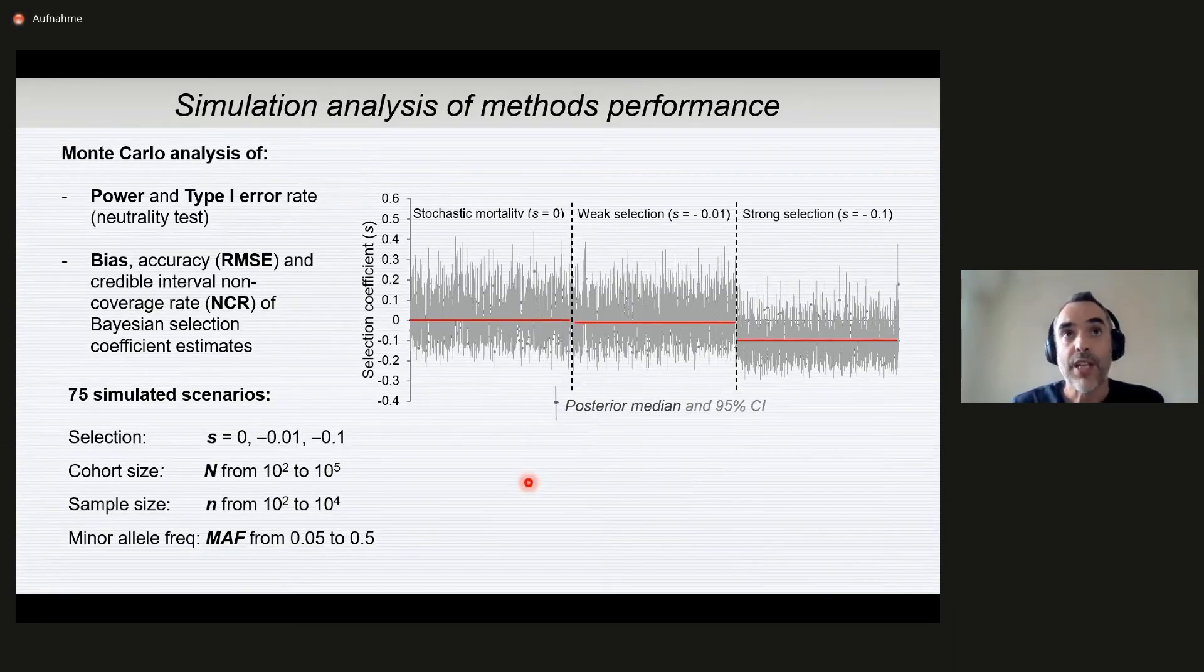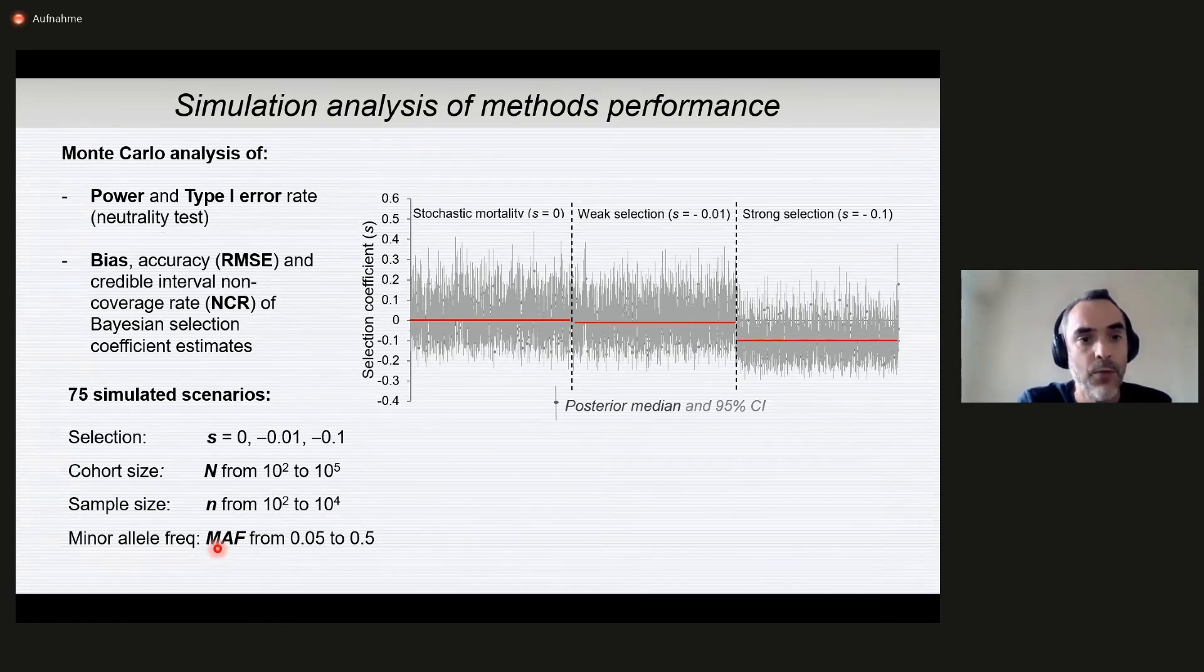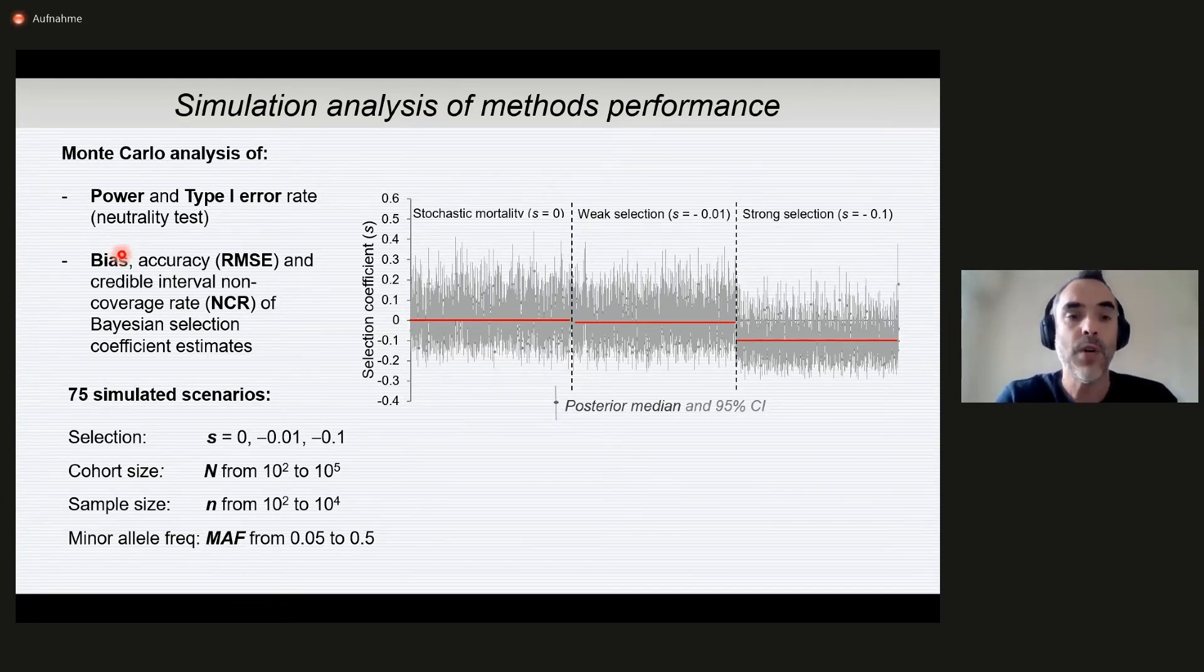We did a simulation analysis of method performance with about 1,000 independent replications each considering either absence of selection, weak selection or strong selection, different cohort sizes, different sample sizes from 100 to 10,000 individuals and different minor allele frequencies. We want to know what is the power of the method when there is no selection and what is the false positive or type 1 error rate when there is actually selection. We have here an illustration of model estimates and their neutrality, weak and strong selection with the points. The dots are the median posterior estimates and the vertical lines are credibility intervals.